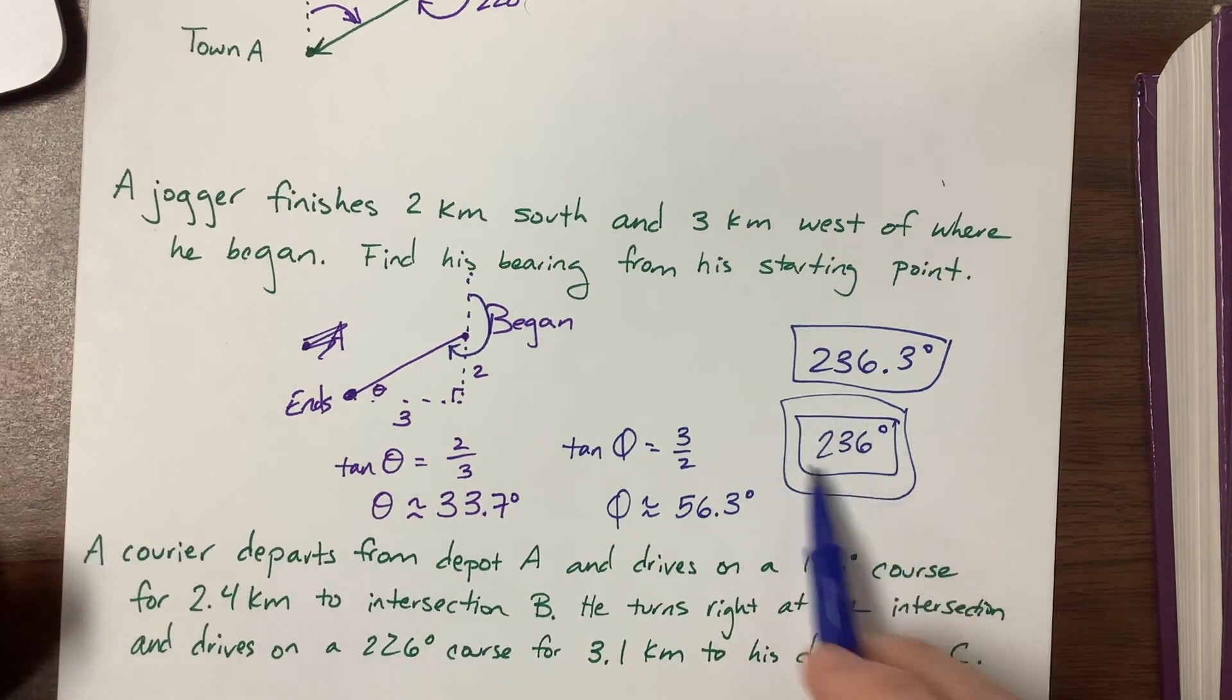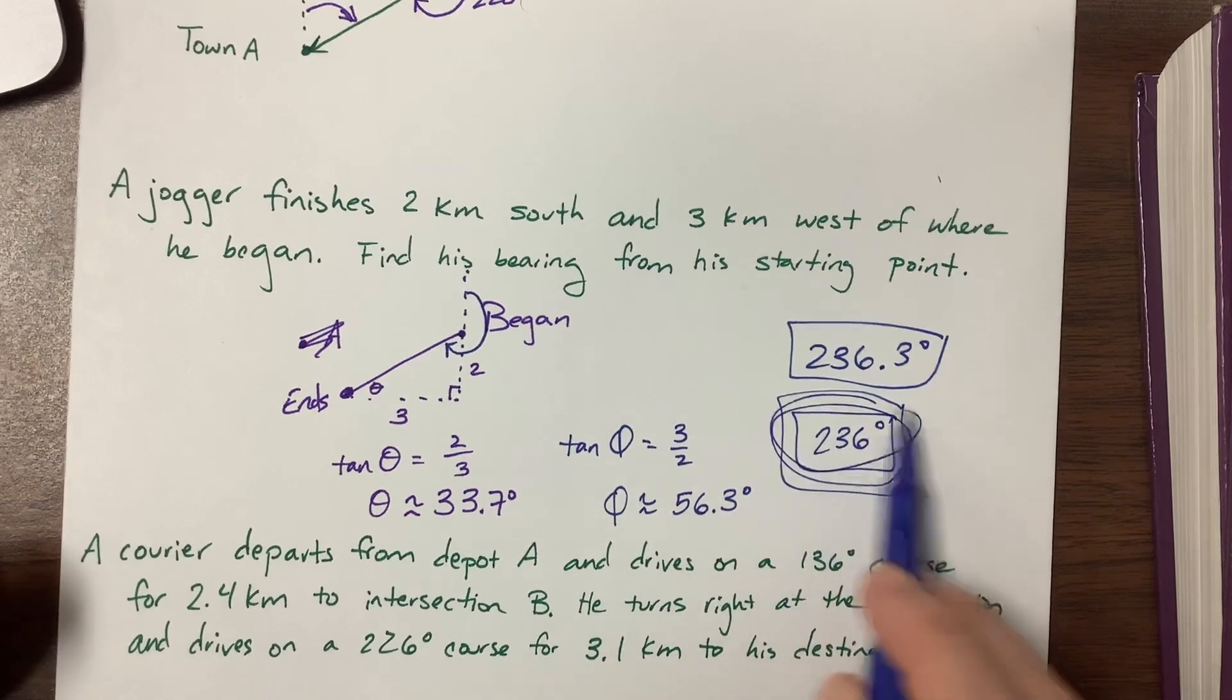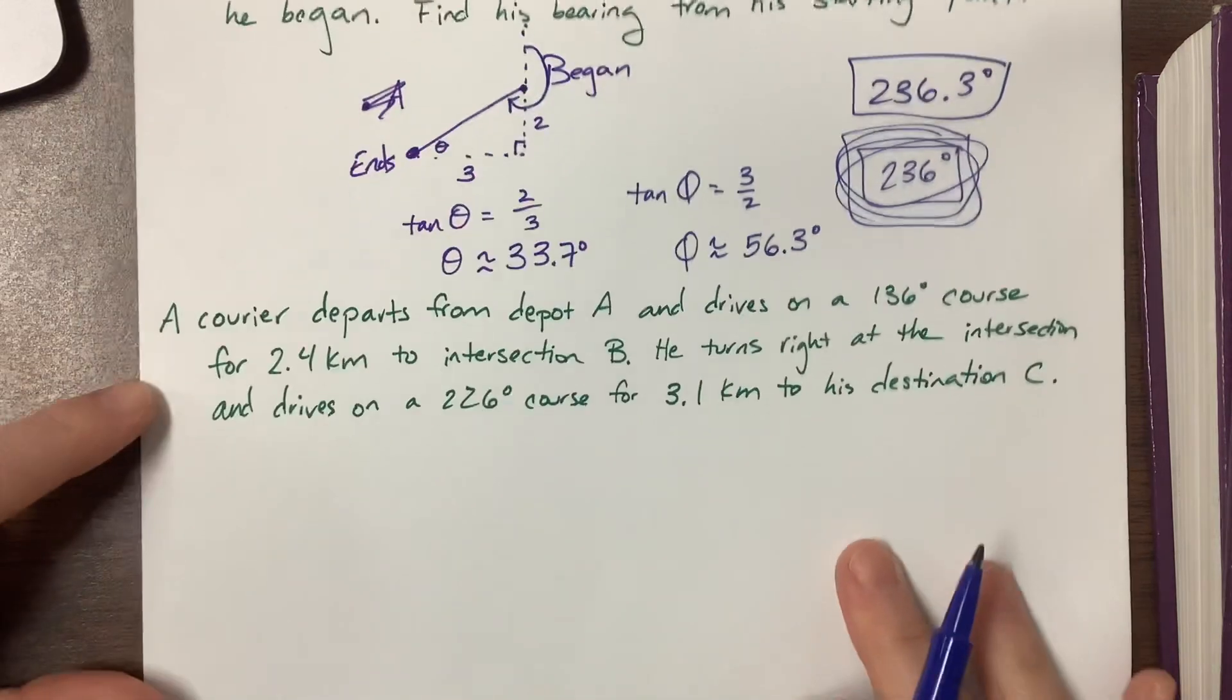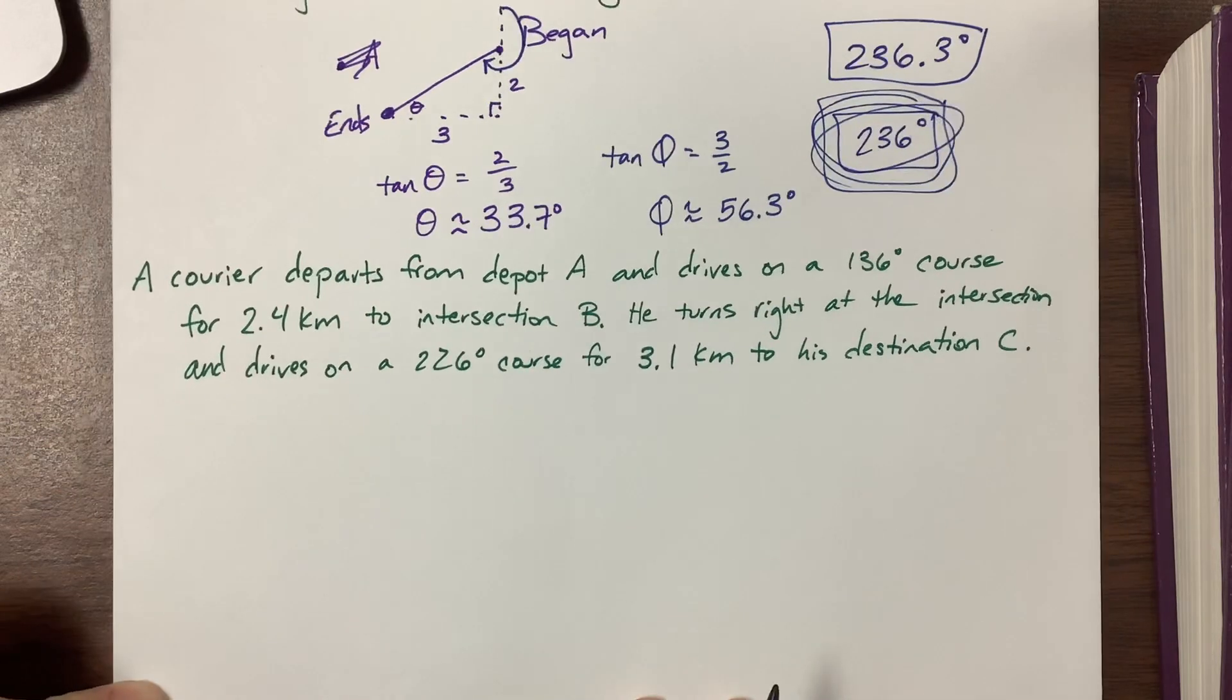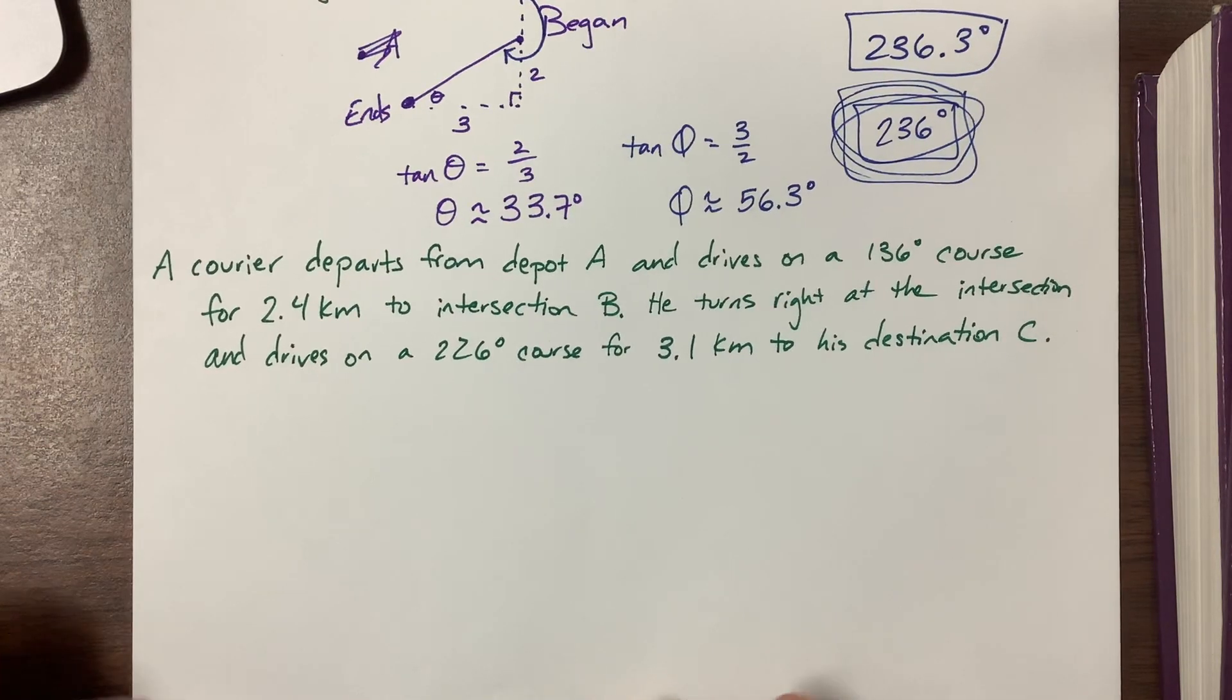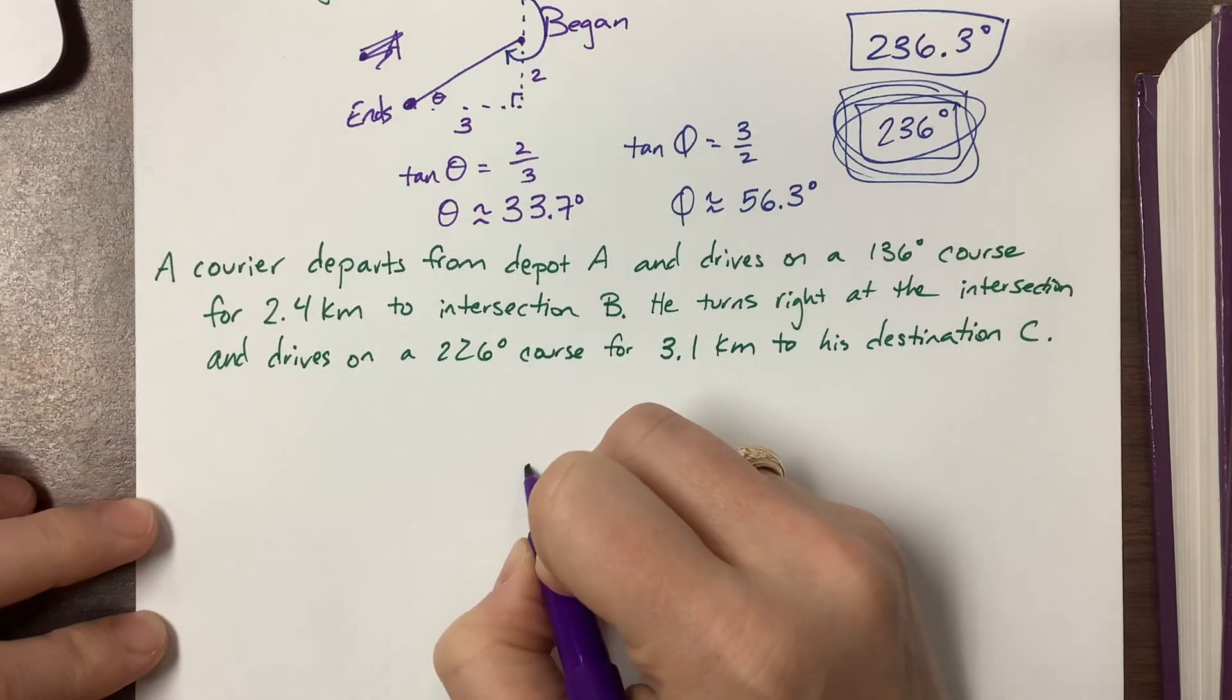We need to be consistent and use three sig figs. The next one that we want to look at says a courier departs from depot A and drives on a 136 degree course for a certain distance, and then he turns right.